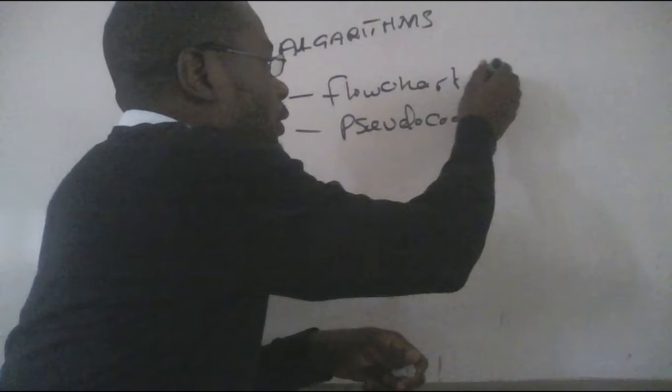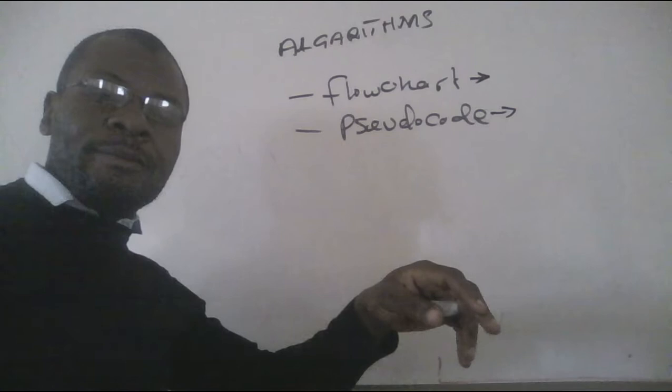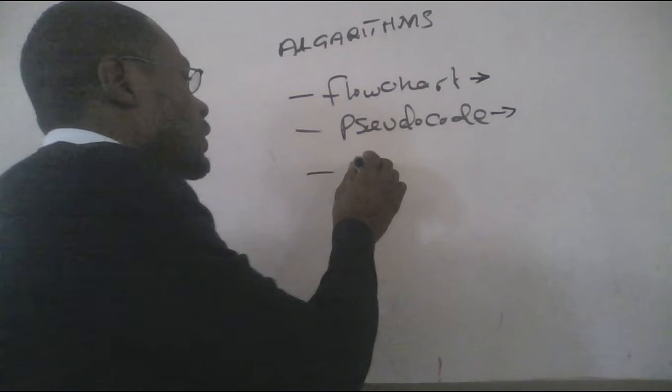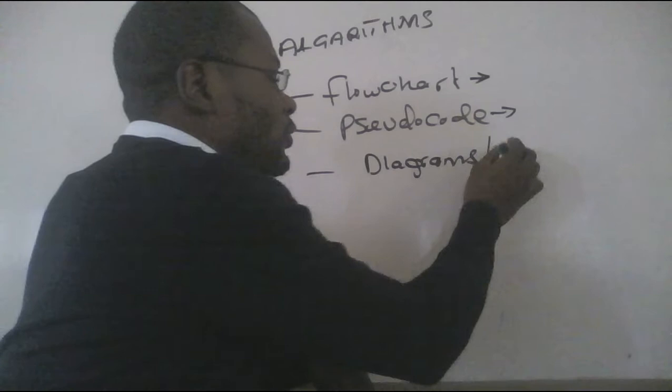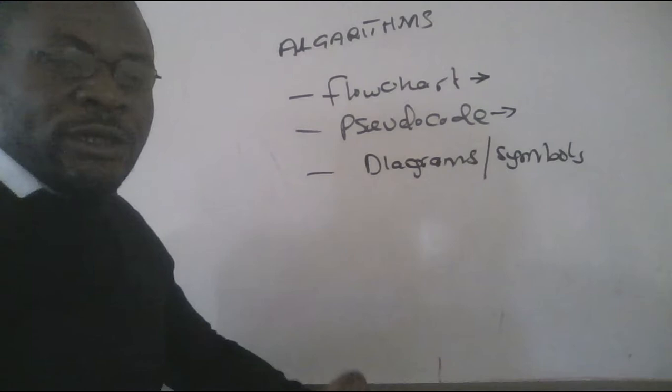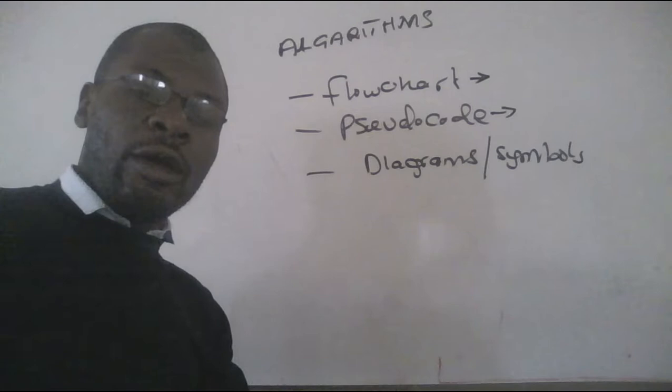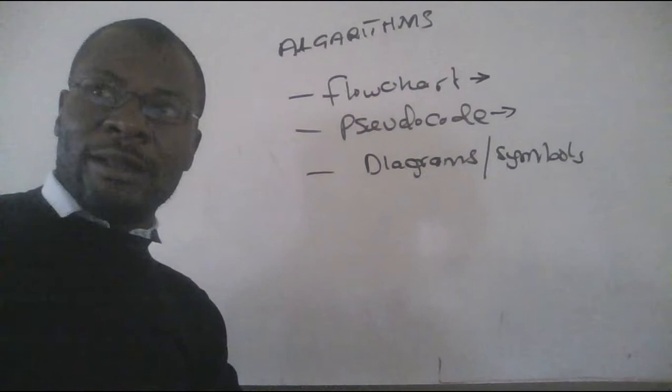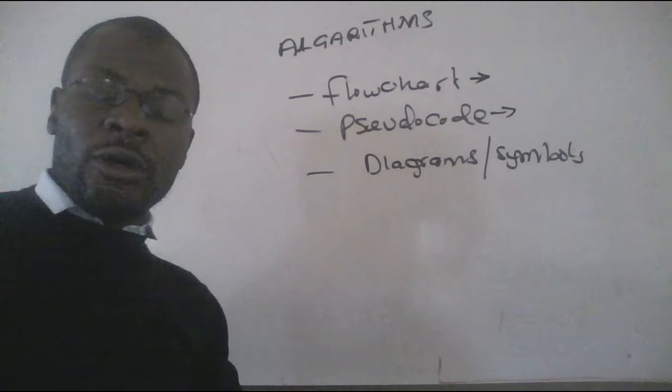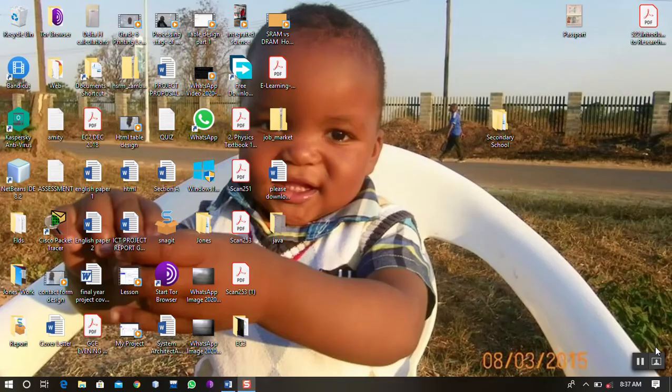For today, we'll start with the flowchart and continue later with pseudocode. What is a flowchart? It uses diagrams or symbols to depict the flow of a program. By definition, a flowchart is a graphical representation of the flow of a computer program, how the program is going to branch from one to the other, how it is going to flow.